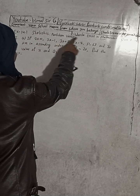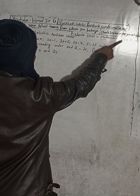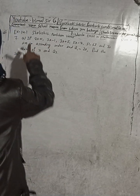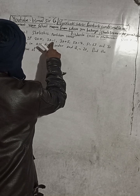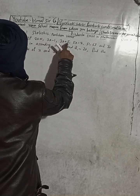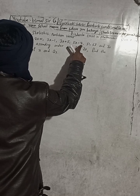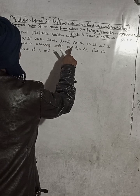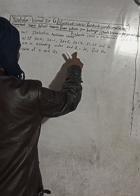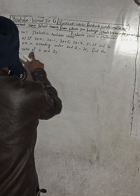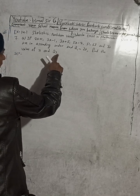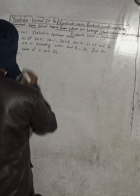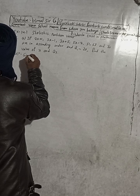This is from Vedanta Excel in Optional Mathematics, Class 9. The question states: if 2x+1, 3x-1, 3x+5, 5x-7, 51, 63, and 70 are in ascending order, and Q1 — that means the lower quartile — is equal to 20, find the value of x and Q3, where Q3 means the upper quartile.